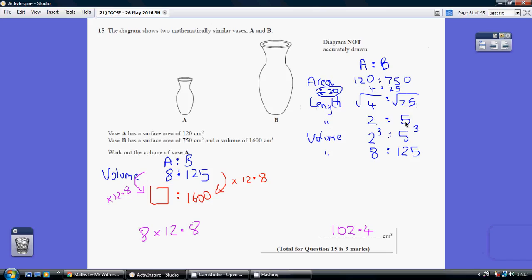How do we get from length to volume? We cube. So, our volume ratio is 2 cubed to 5 cubed, 8 to 125. So, that's our volume ratio.